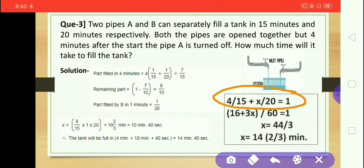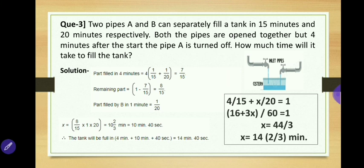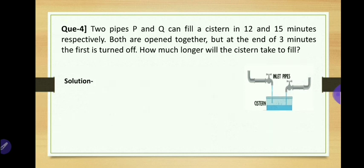By making the equation — adding the parts filled by respective pipes equal to 1 — you can easily find the unknown. Solving 4/15 plus x/20 equals 1 gives x equals 14 and 2/3, where 2/3 minute equals 40 seconds. Therefore the total time is 14 minutes 40 seconds. This trick can solve this type of problem very efficiently.